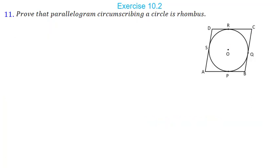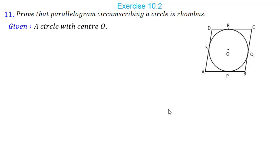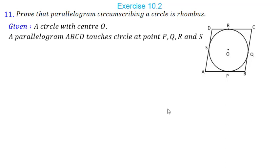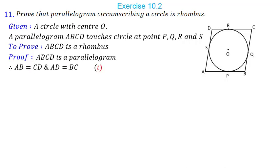Now let us see the eleventh question. Prove that a parallelogram circumscribing a circle is a rhombus. ABCD is a parallelogram circumscribing the circle, touching it at points P, Q, R, S. We have to prove all four sides are equal. A circle with center O is given; parallelogram ABCD touches the circle at P, Q, R, S. We will use theorem 2 again. Since ABCD is a parallelogram: AB = CD and AD = BC (opposite sides equal).